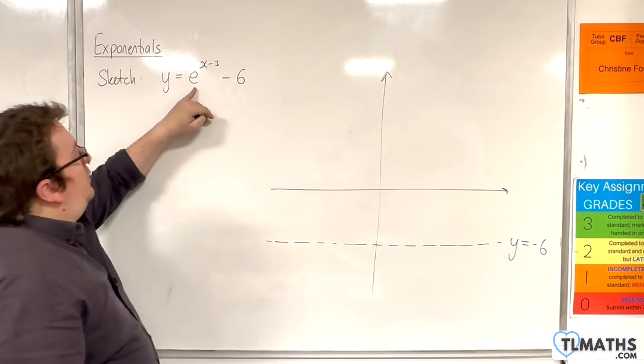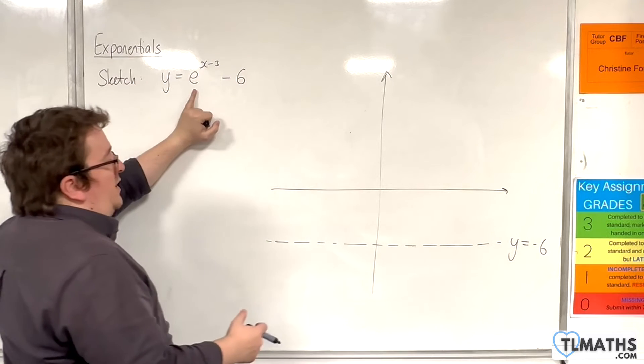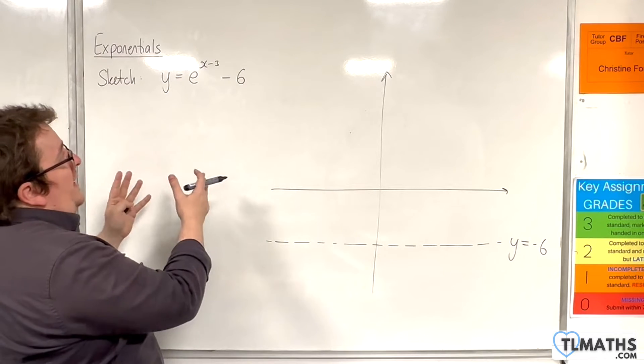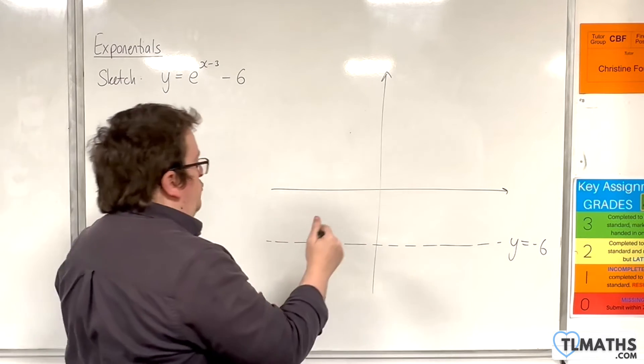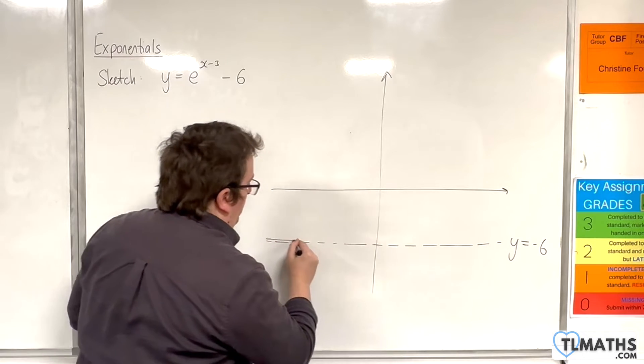Now, our exponential curve, e to the x take away 3, is just the normal e to the x, but translated 3 units to the right. So, it'll look like this.